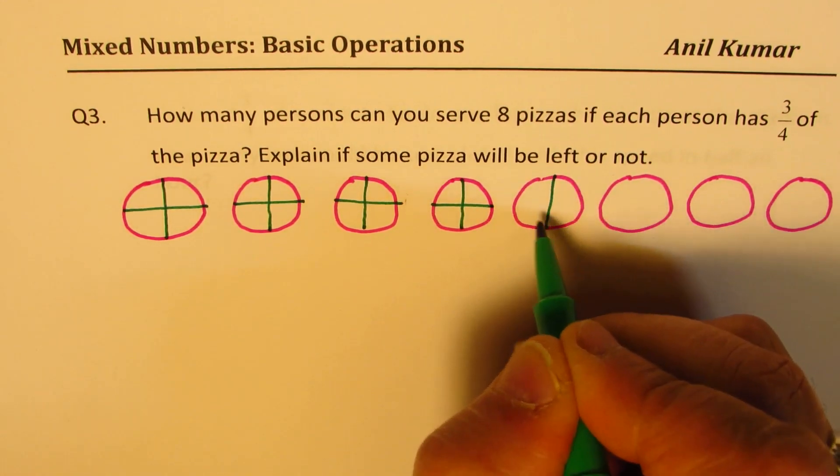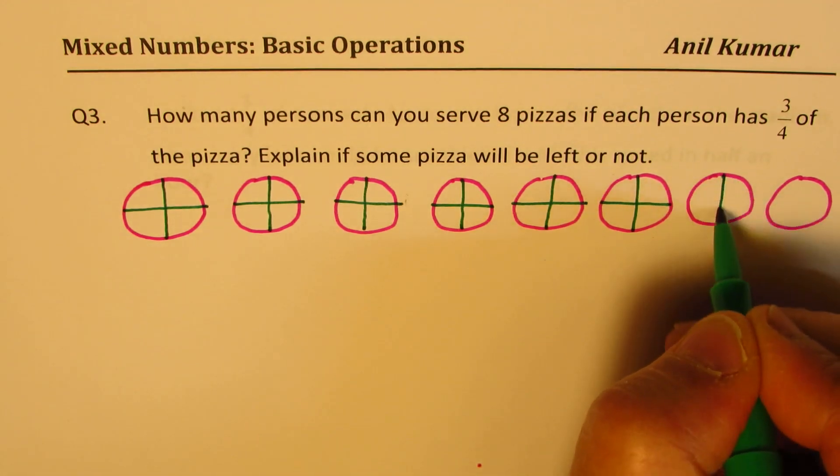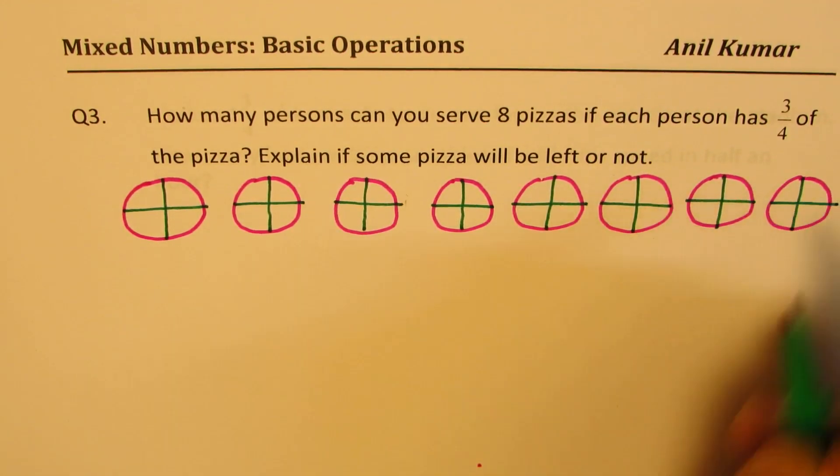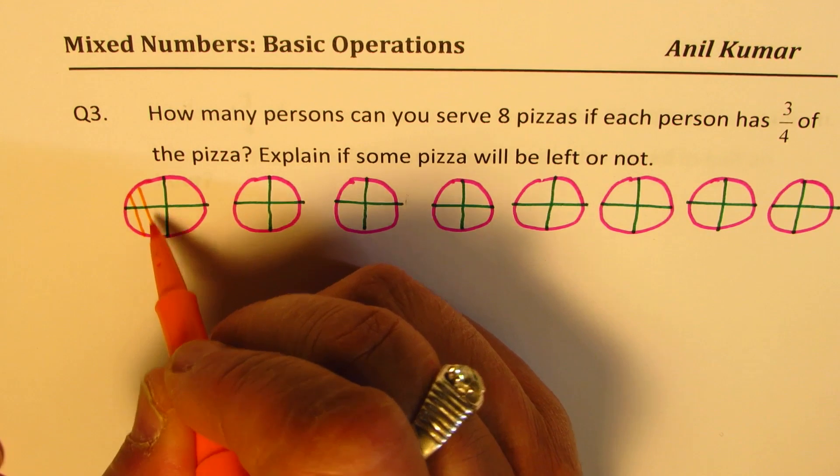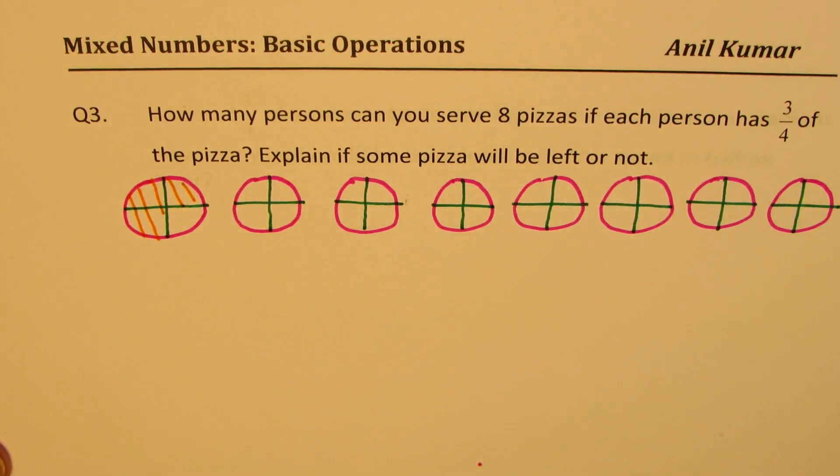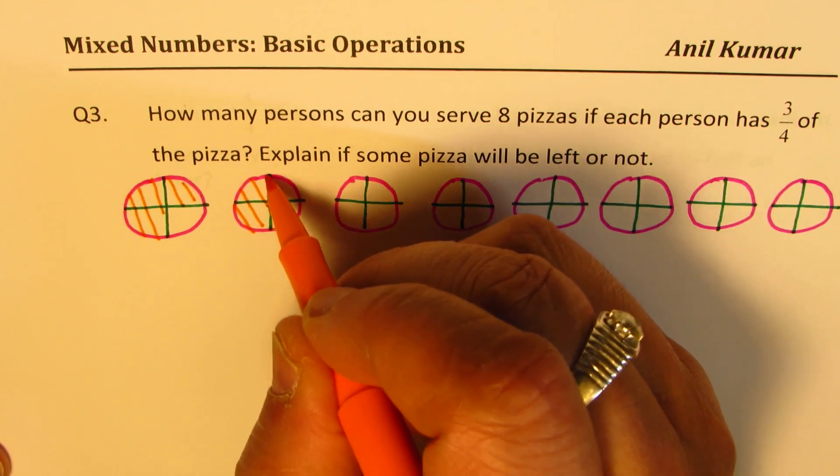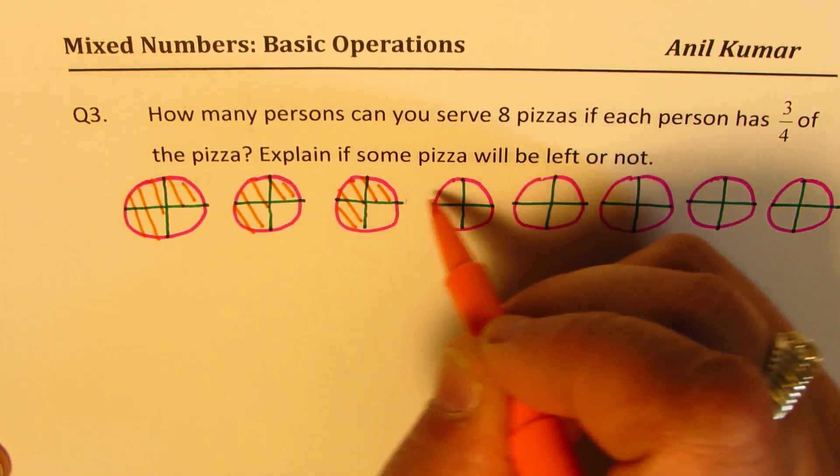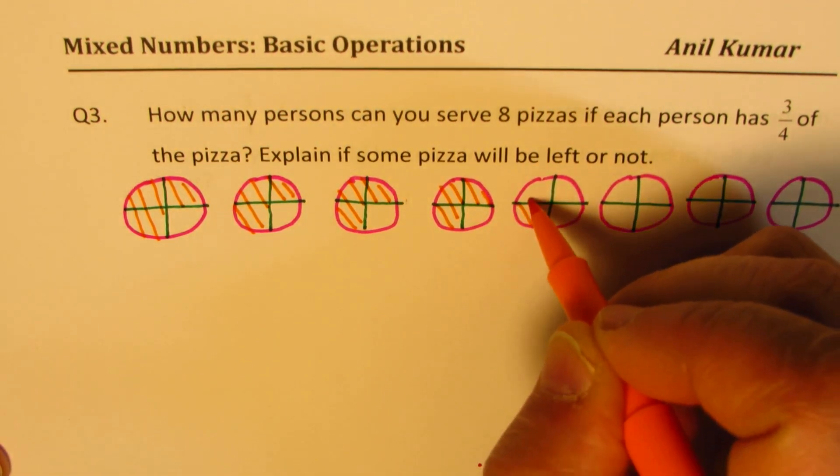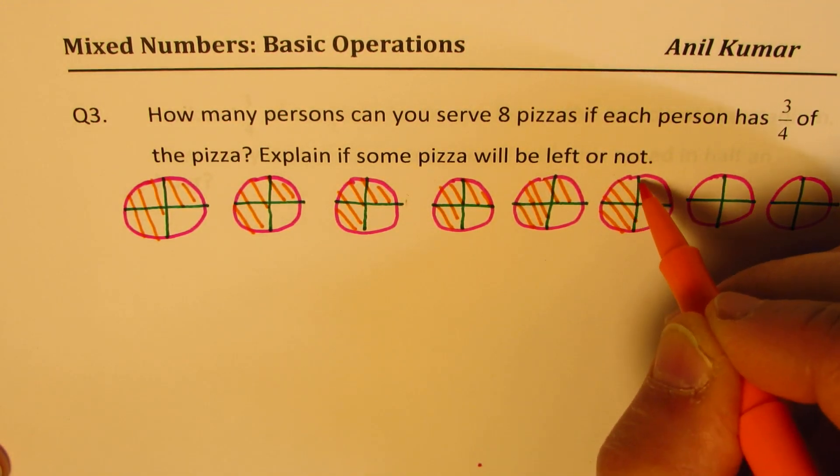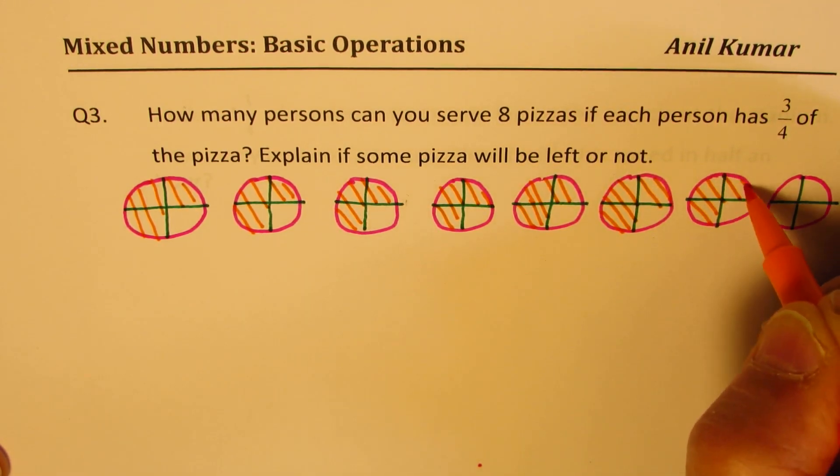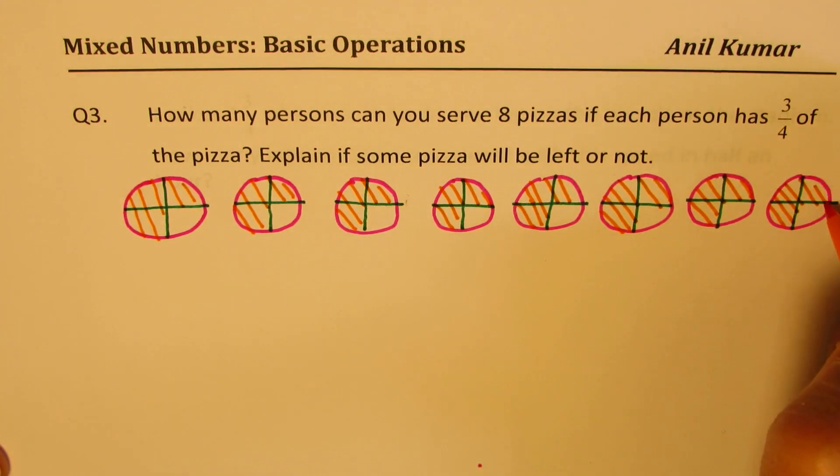So 8 pizzas. Let's say these are our 8 pizzas: 1, 2, 3, 4, 5, 6, 7, and 8. Since we are talking about 3/4, let me divide them into 4 equal parts. So assume these are all 4 equal parts of each pizza. Now, we are saying that each person has 3/4. 3/4 means what? 3 out of 4. So, so let's say these are 4 pieces. So 1 person has 3/4.